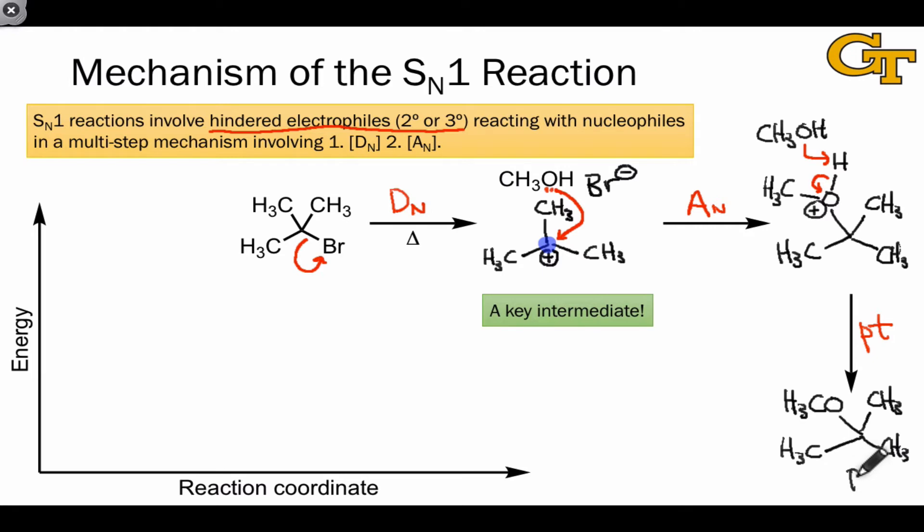On the whole, because the reaction has resulted in the displacement of a good leaving group, the process is thermodynamically favorable. So we can place the products at a lower energy than the reactants on a reaction coordinate diagram.